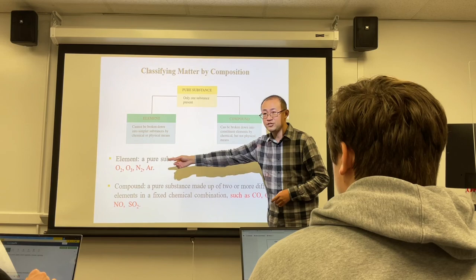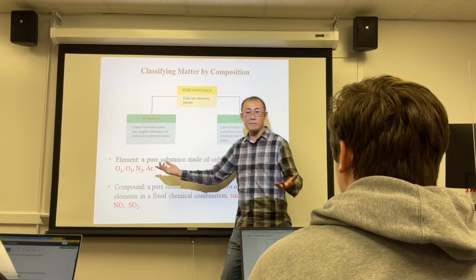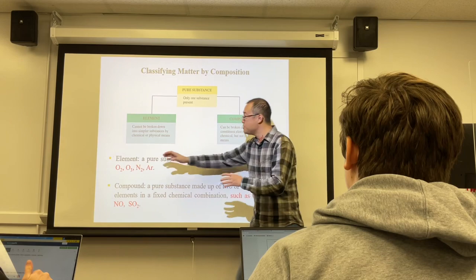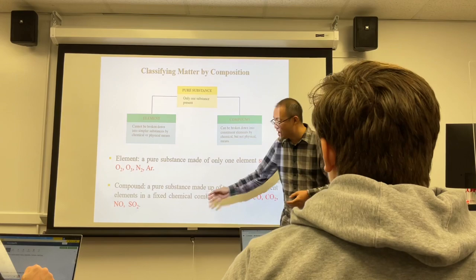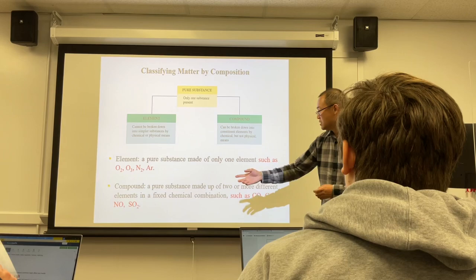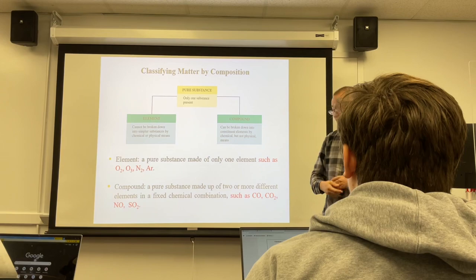Oxygen, ozone, nitrogen, and argon are all made of only one single element, which is why these pure substances cannot be further decomposed. On the other hand, a compound is a pure substance made of two or more different elements in a fixed chemical combination. For example, carbon monoxide is made of carbon and oxygen in a 1:1 ratio.